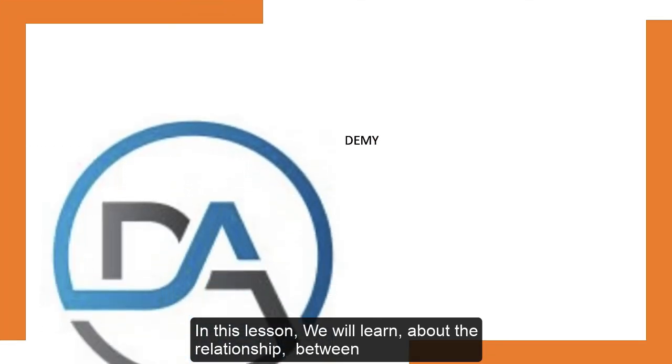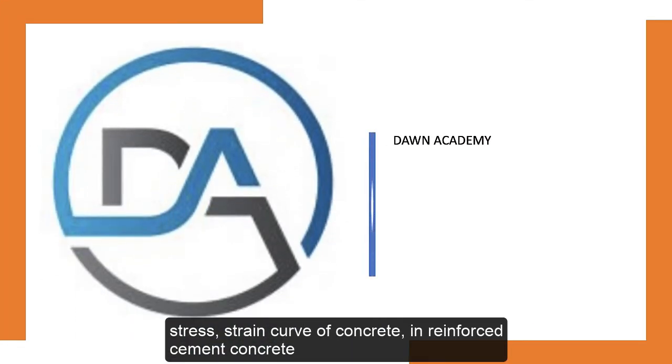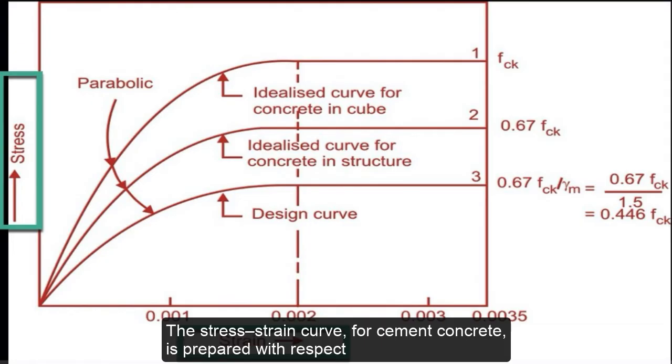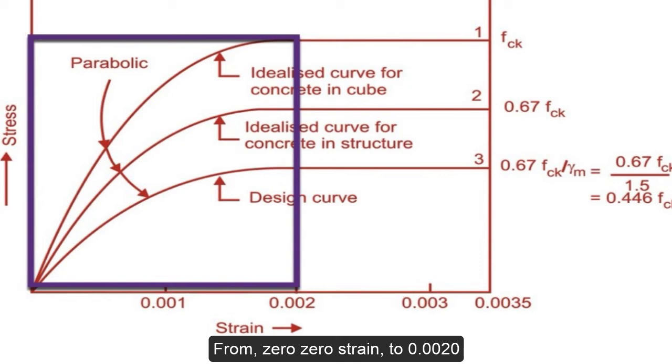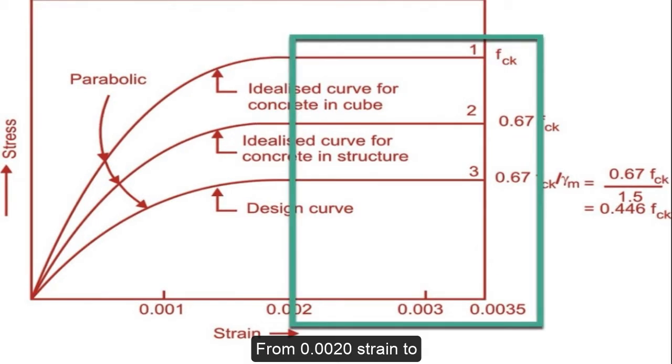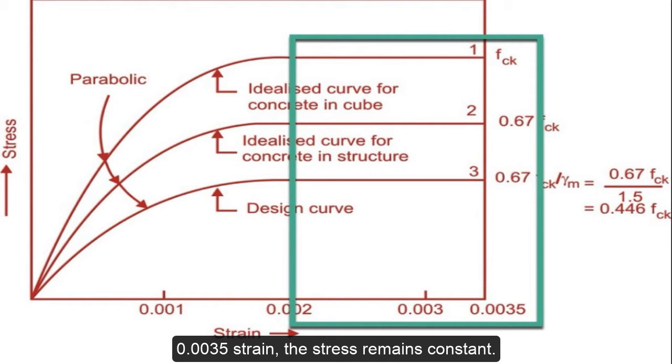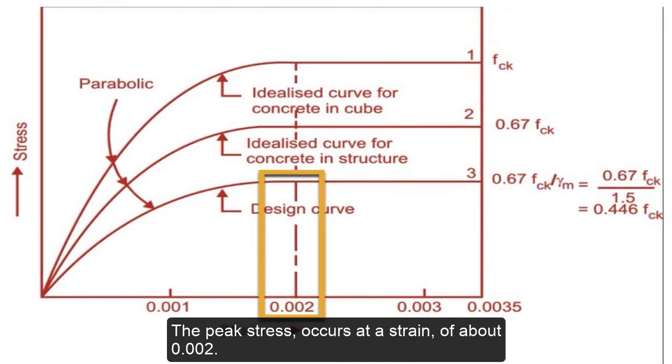the relationship between stress-strain curve of concrete in reinforced cement concrete. The stress-strain curve for cement concrete is prepared with respect to the compressive stress in the cube up to crushing stage. From zero strain to 0.0020 strain the curve is parabolic. From 0.0020 strain to 0.0035 strain the stress remains constant. The peak stress occurs